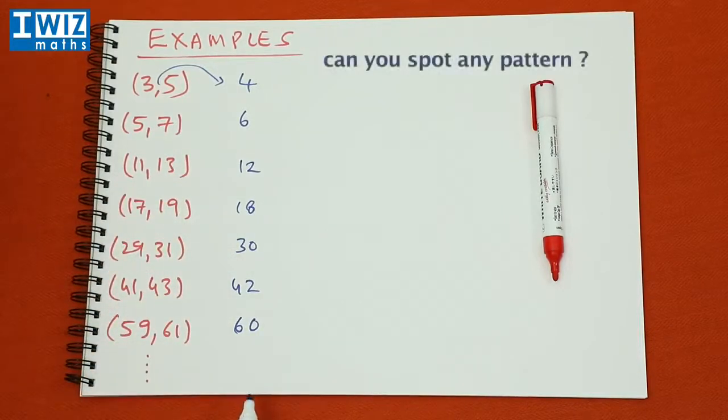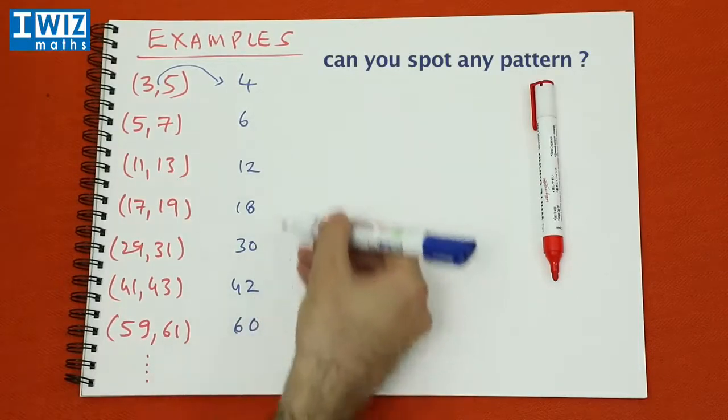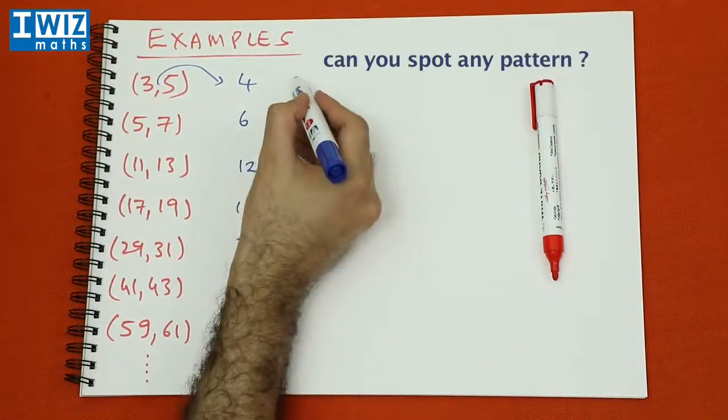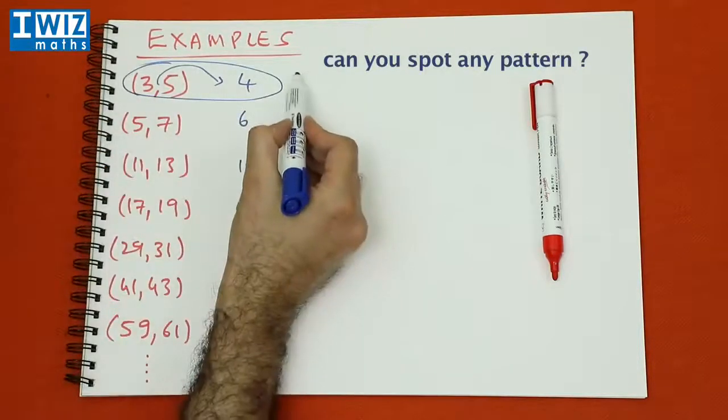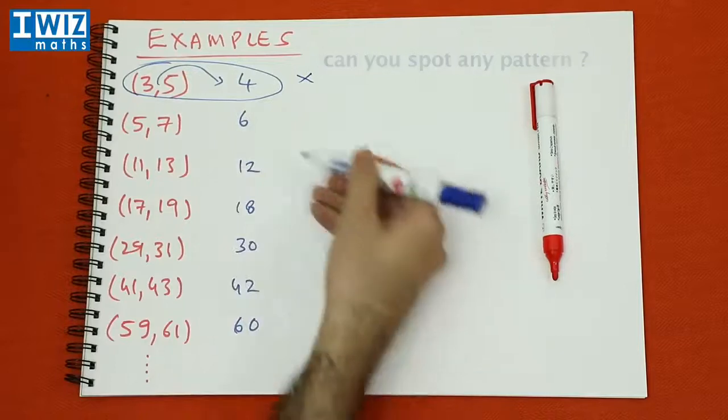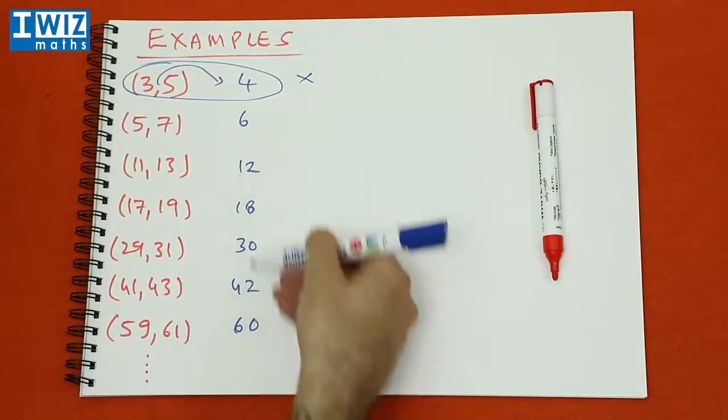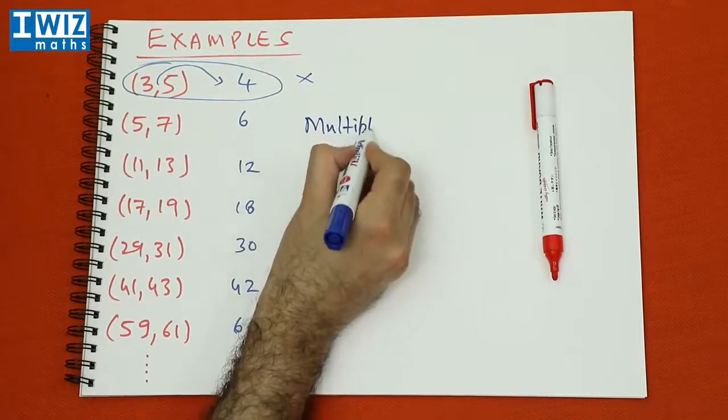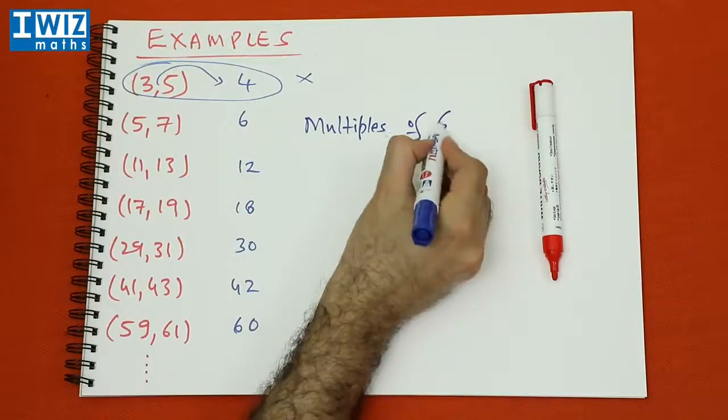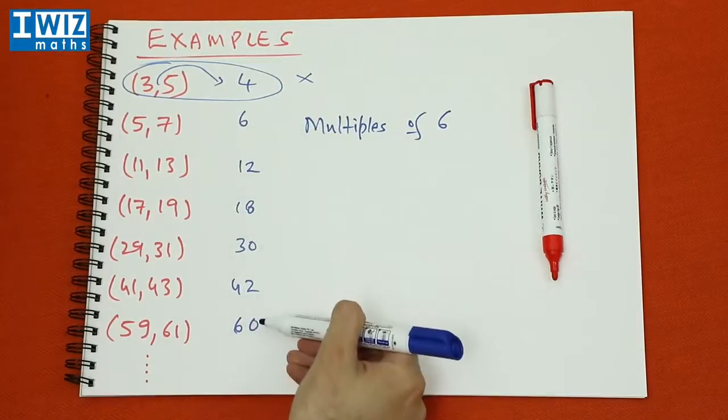Now, is there a pattern that we can actually spot here? If we consider all of these numbers except the first one, so we don't consider the first twin prime, but we consider all the other numbers here, we find that all these numbers are actually multiples of 6. That's interesting, isn't it? So all of these numbers here are multiples of 6.